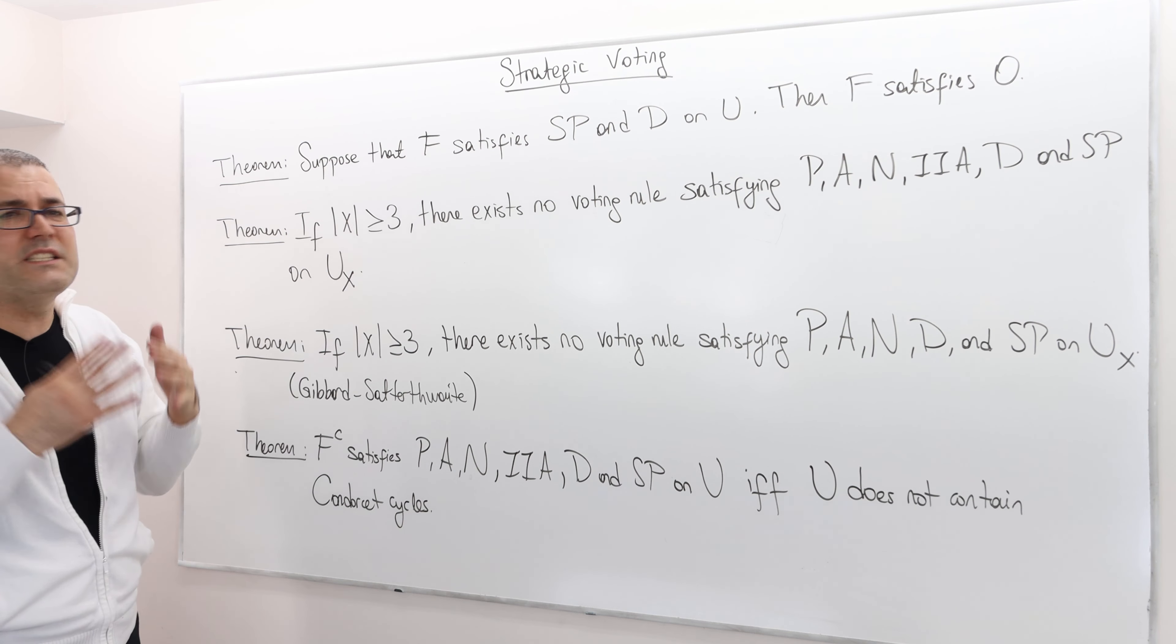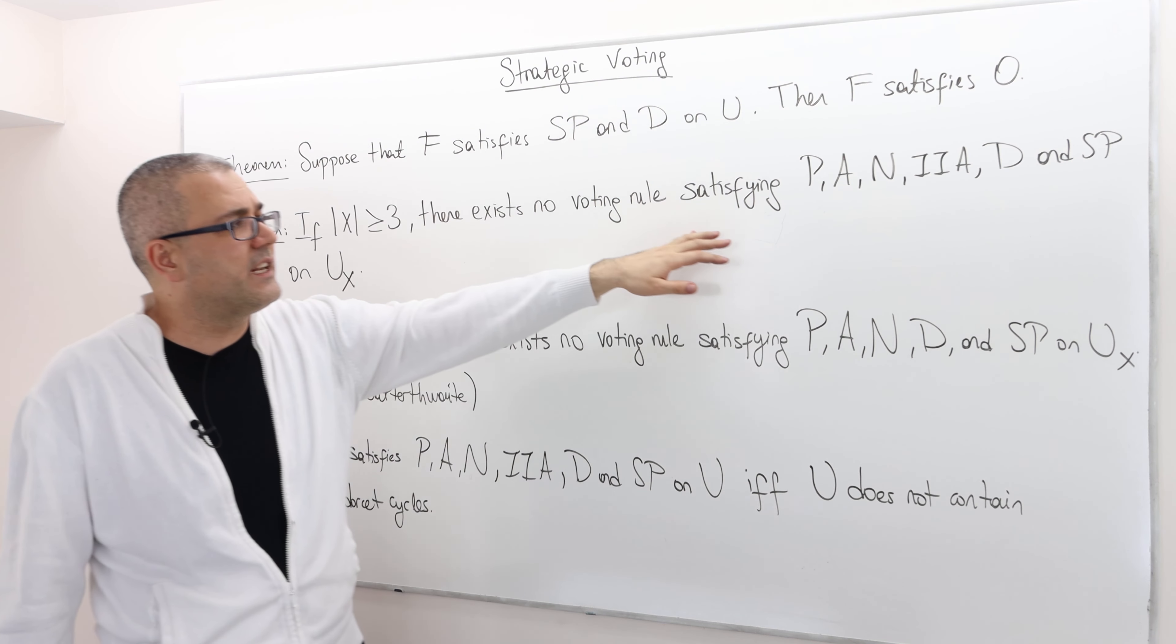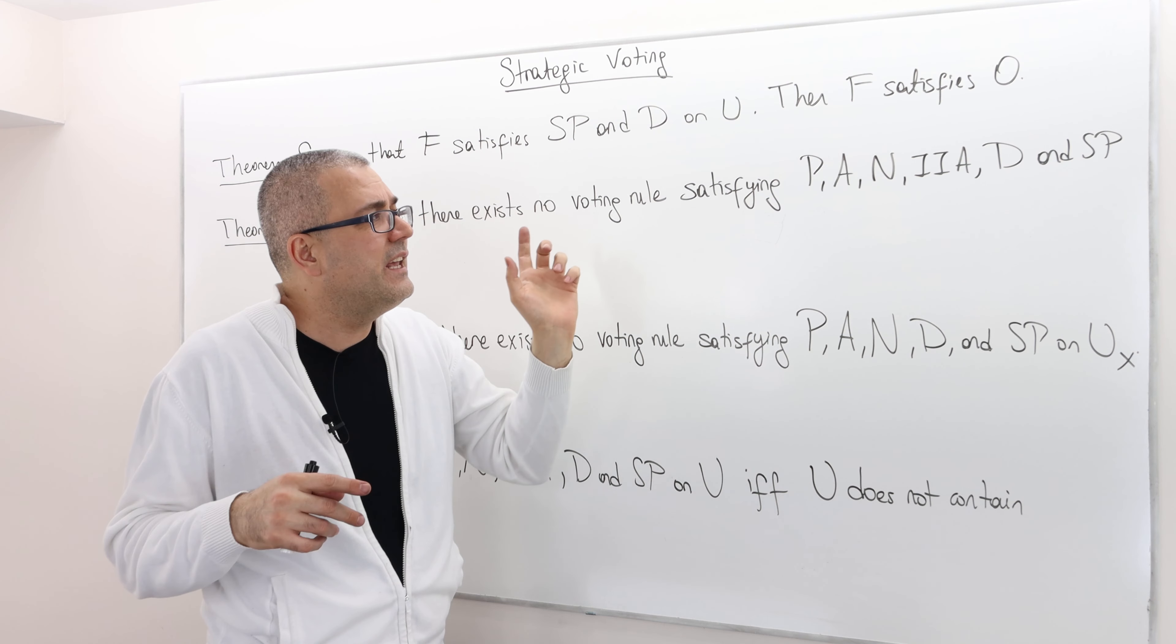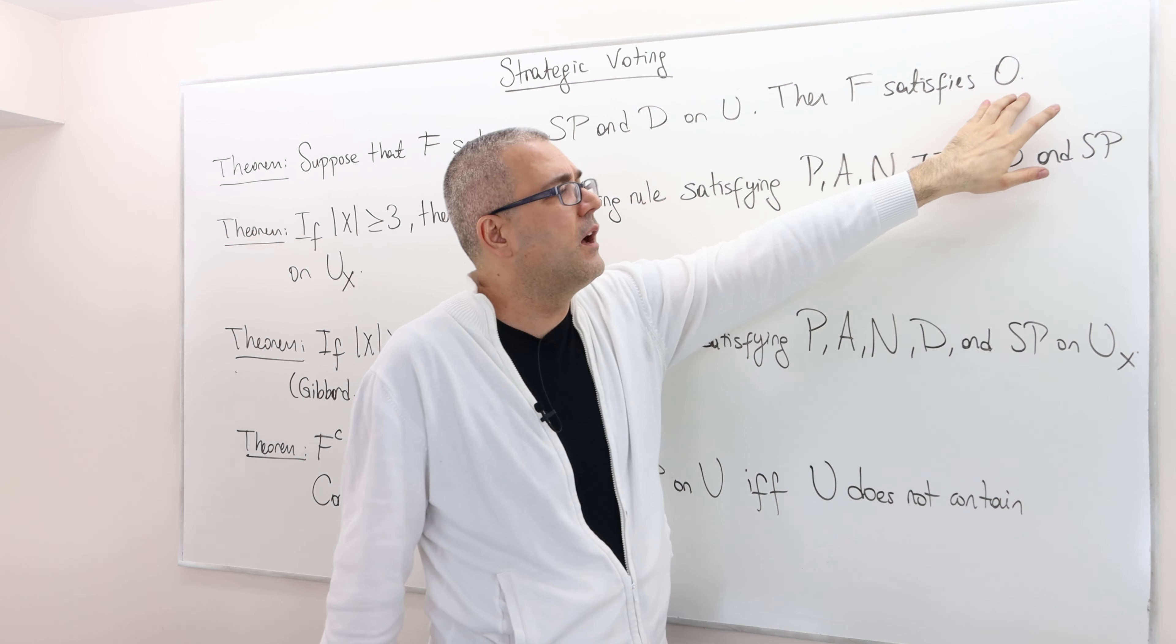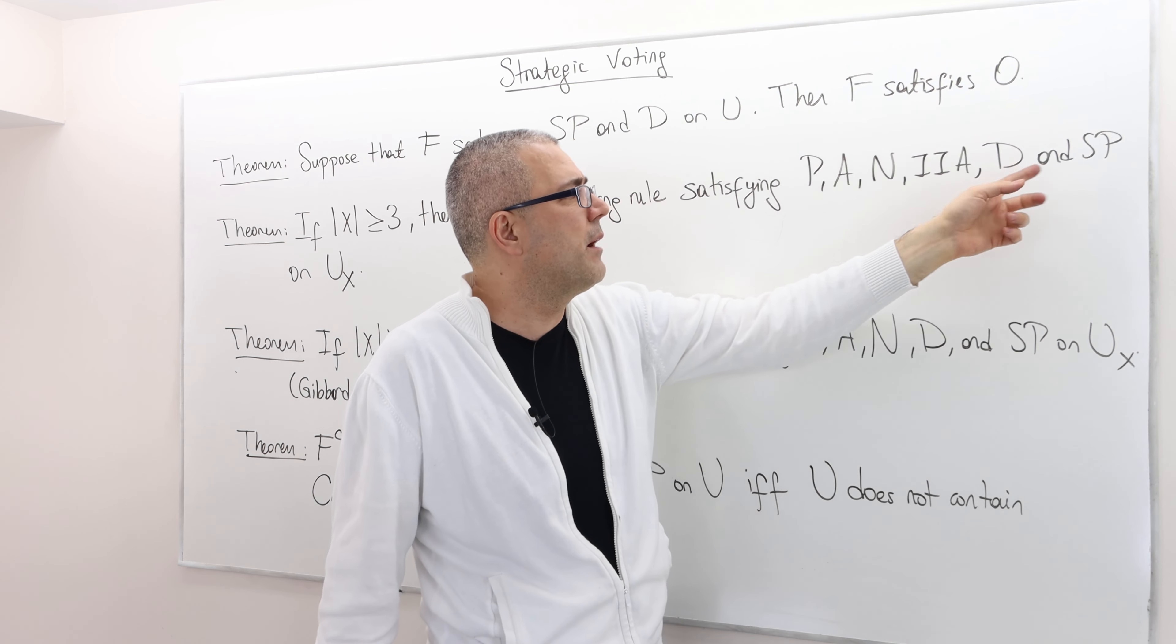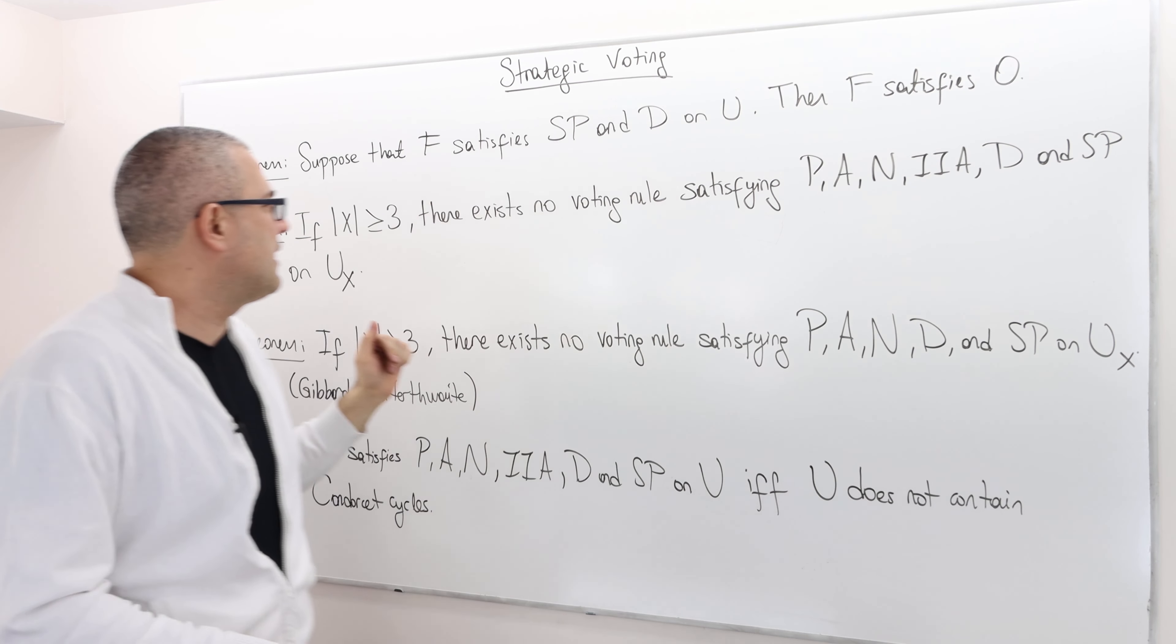So if we have at least three candidates then there exists no voting rule which is going to satisfy all the six axioms. But here instead of this axiom we incorporate strategy proofness because remember D and SP implies O anyhow. So that's an impossibility.